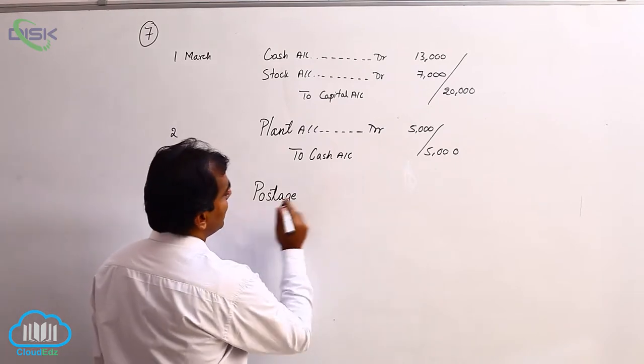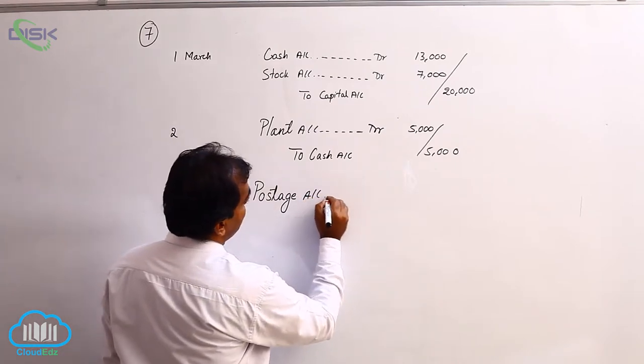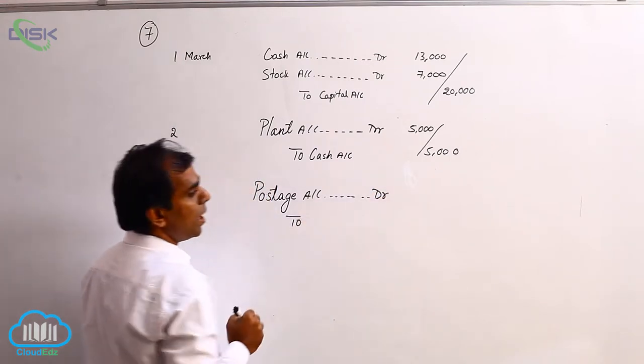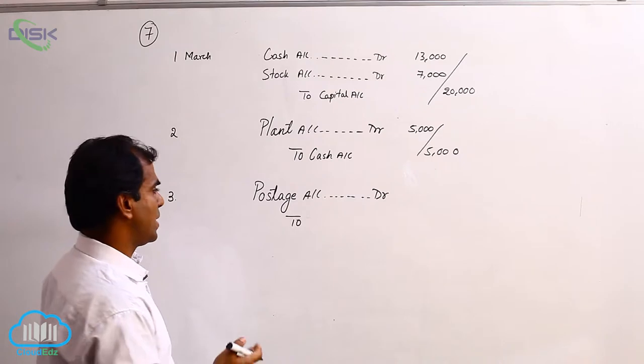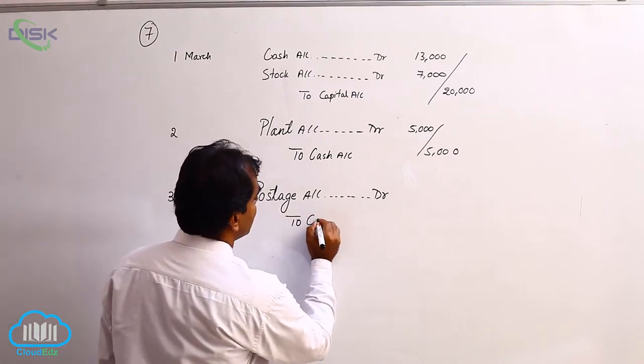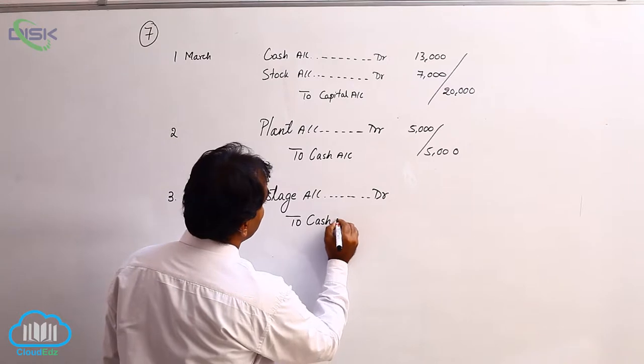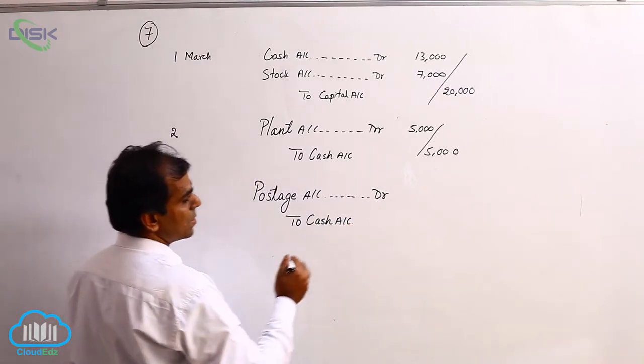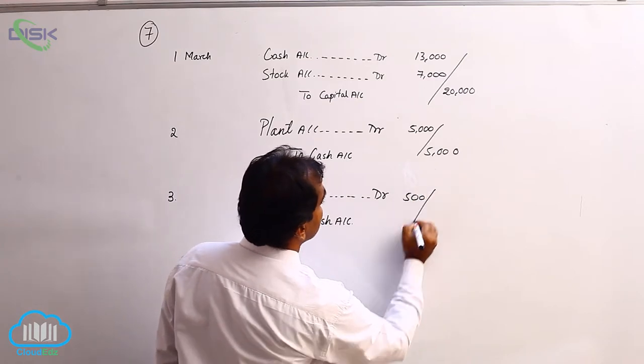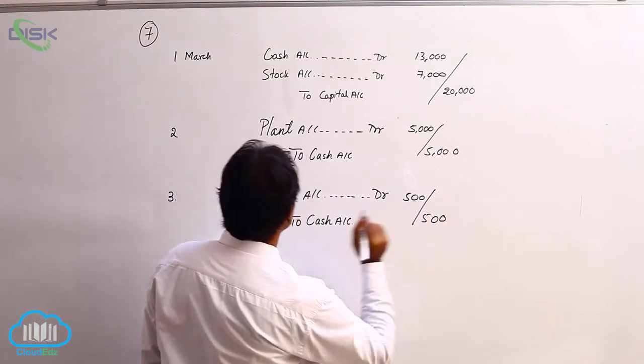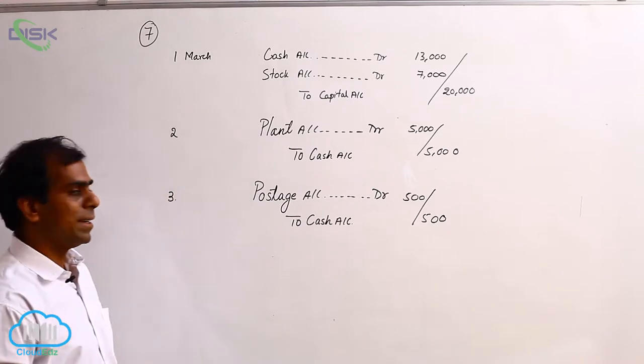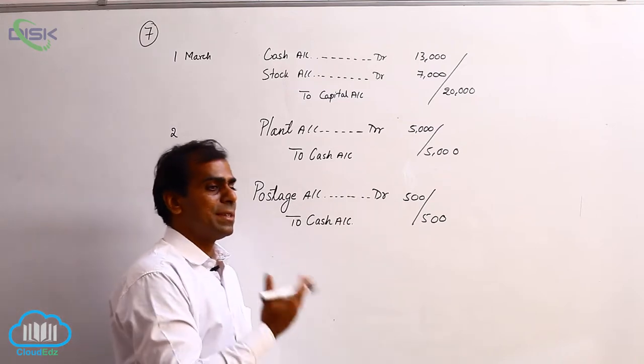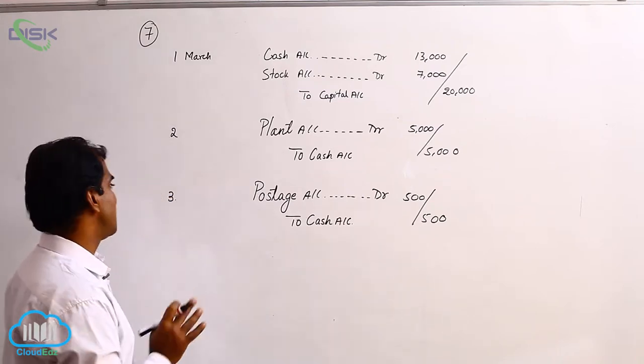So that is why we will debit postage. So we write postage account debit. How we will get it, we paid for it. So cash is going out, real account is going out. So we are going to credit the cash because it is going out and it is a real account. So how much, 500. So our journal entry, postage account debit 500 to cash 500, being postage purchased or being postal items purchased.